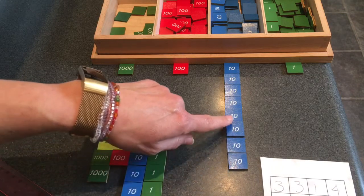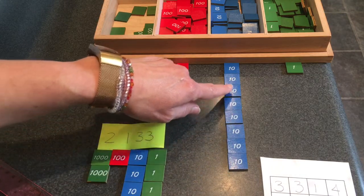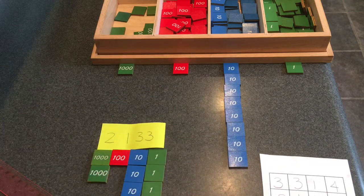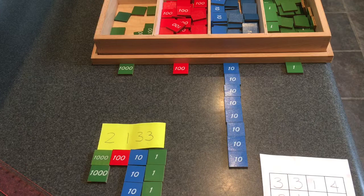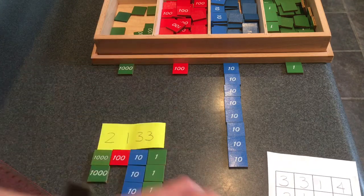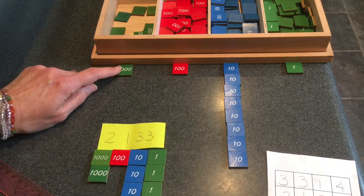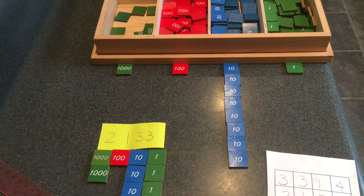One, two, three, four, five, six, seven, eight. Eight tens. How many hundreds? That's right, one hundred. And how many thousands? One thousand. That's right.